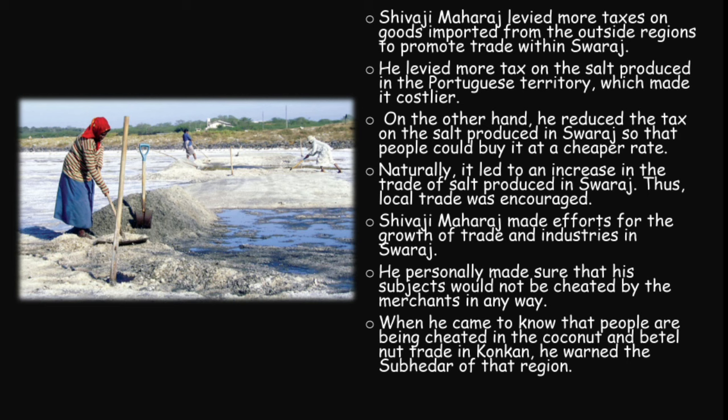This naturally led to an increase in the trade of salt produced in Swaraj, and local trade was encouraged. Shivaji Maharaj made efforts for the growth of trade and industries in Swaraj. He personally made sure that his subjects could not be cheated by merchants. When he came to know that people were being cheated in the accounts and retail net trade in Konkan, he warned the Subedar of that region. Students will see the remaining part in the next lesson. Thank you.